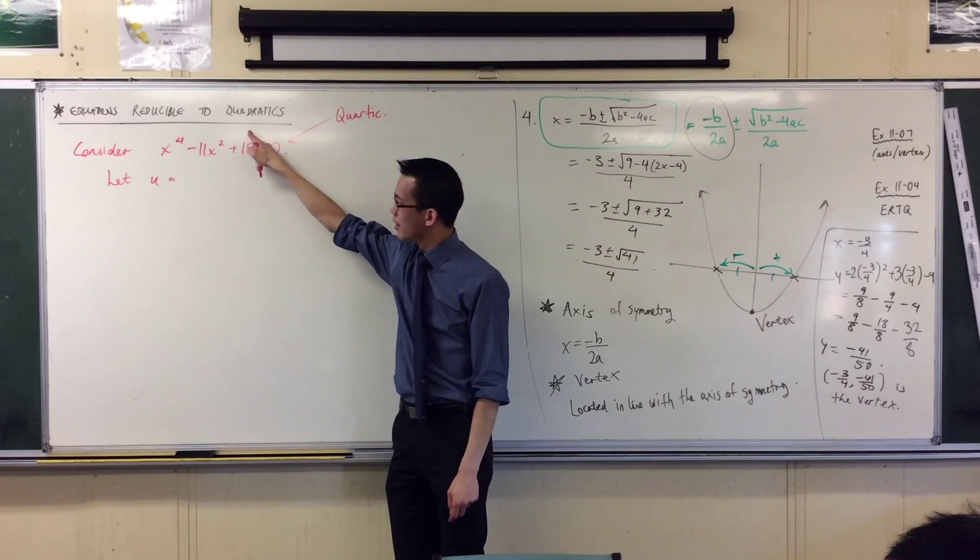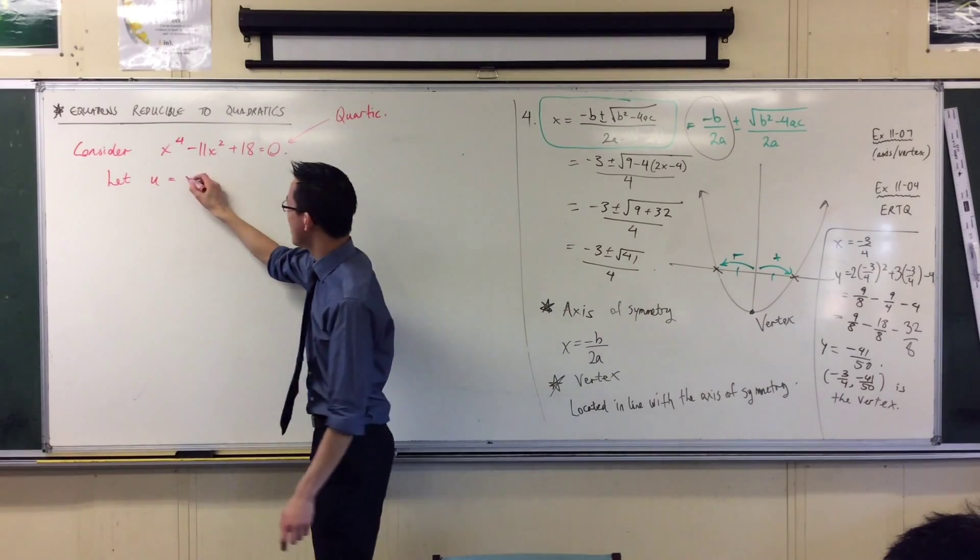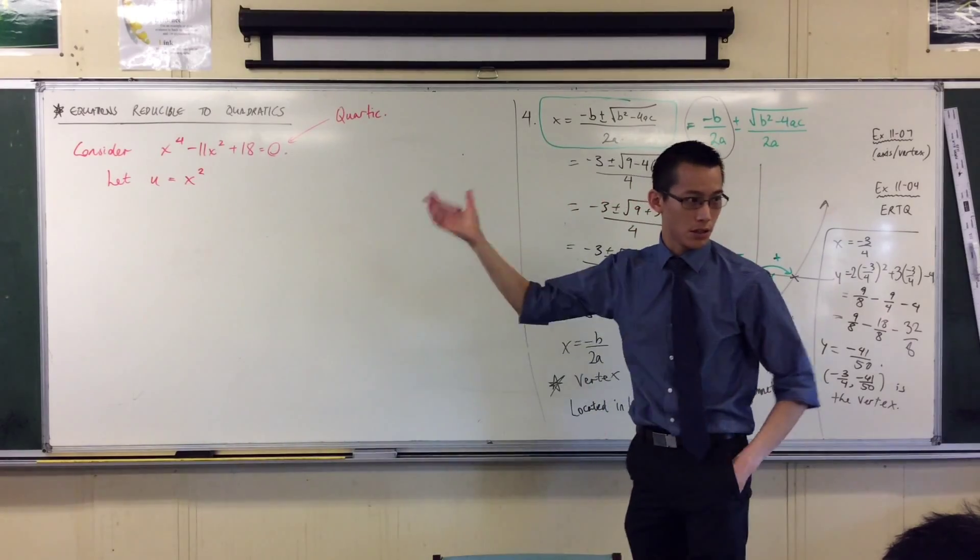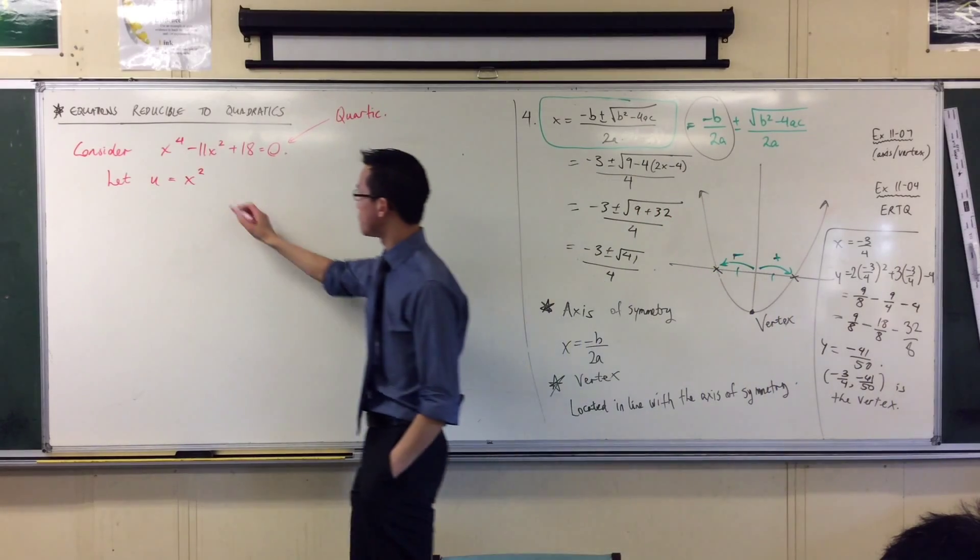So what I'm going to swap these terms for is instead of every time I see x squared, I'm going to write u. So if u equals x squared, I can get rid of this.